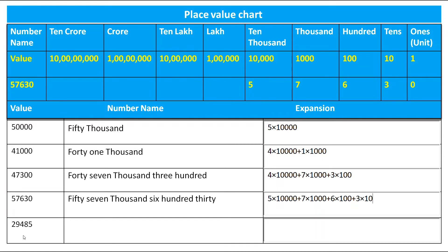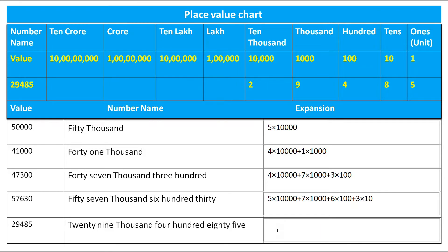The next number is 29,485. Let's put it in the place value chart. 2 is on 10,000 place, 9 is on 1,000, 4 is on 100, 8 is on 10s, and 5 is on the unit place. The number name is twenty-nine thousand four hundred eighty-five. The expansion is 2 × 10,000 + 9 × 1,000 + 4 × 100 + 8 × 10 + 5 × 1.